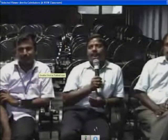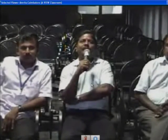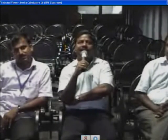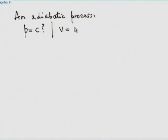A student from Amrita asks: in test 2, a question about an adiabatic process stated all four choices are correct — can you explain? The choices were: (A) p = constant, (B) v = constant, (C) pv = constant, (D) pv^γ = constant.